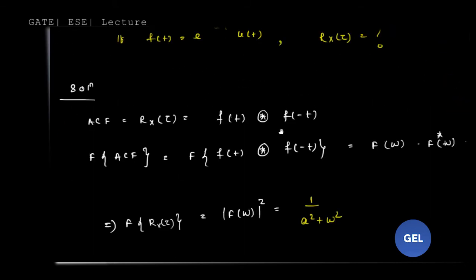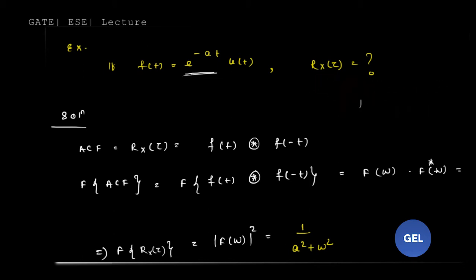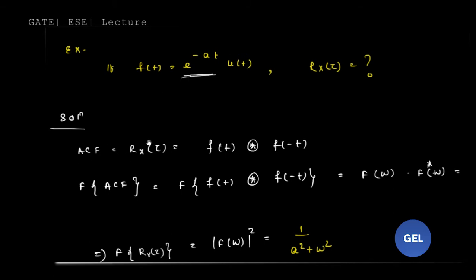Before solving this question I need to revise what we discussed in the previous lecture. If a question gives f(t) = e^(-8t) u(t), what is the value of R_X(τ), the autocorrelation function? To find it, we can compute f(t) convolved with f(−t). To do it efficiently, take the Fourier transform of the autocorrelation function and take the Fourier transform of the convolution of these two signals.